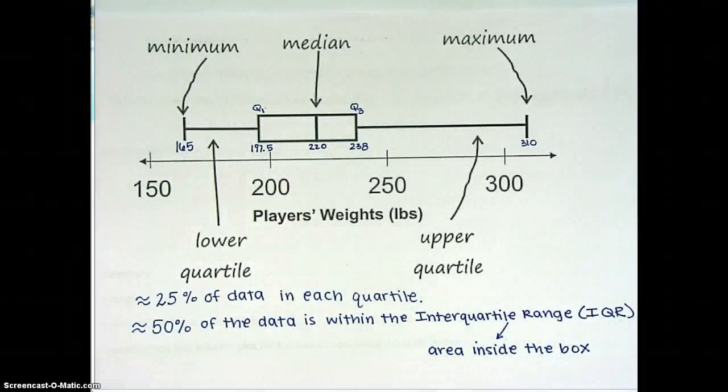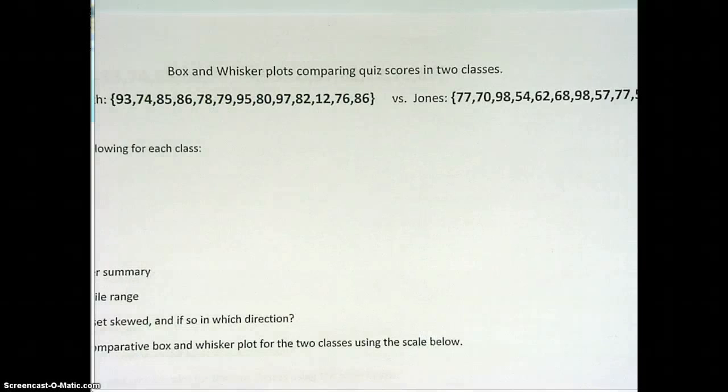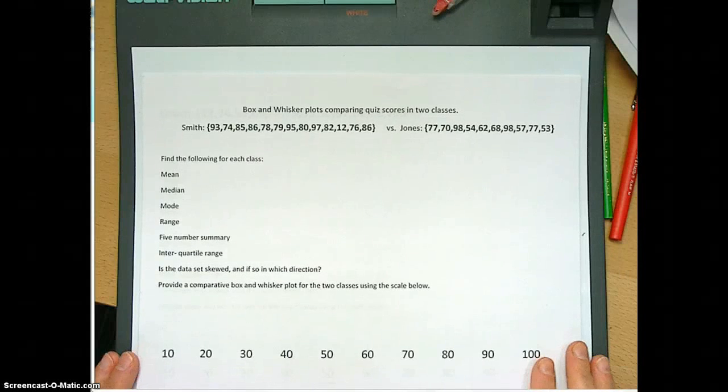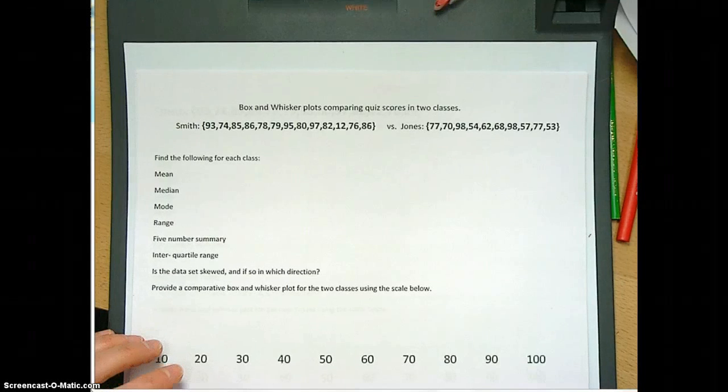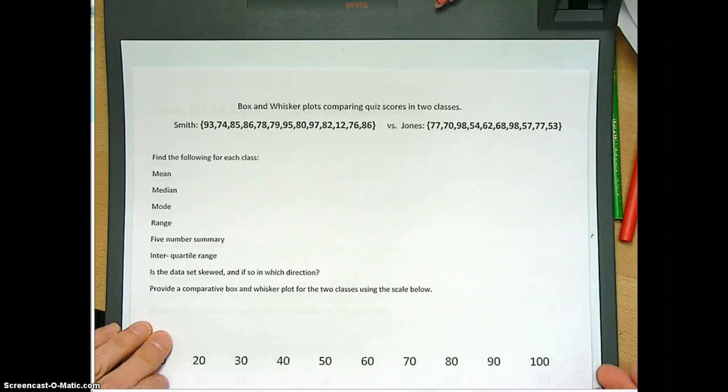Now let's make a box and whisker plot. We're actually going to make two box and whisker plots. We're going to compare two classes. We're going to compare Ms. Smith's class and Ms. Jones's class. What we're going to do first is we're going to do Ms. Smith's class together, and then I'm going to have you all pause the video and do Ms. Jones's class. This is the sheet you should have printed out before you watched this video.